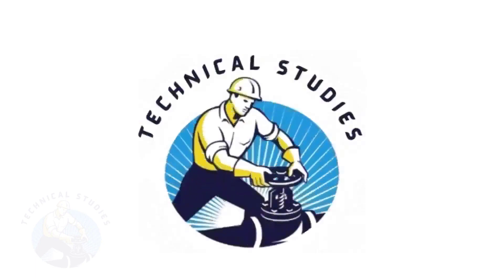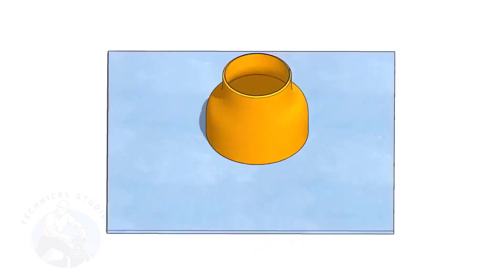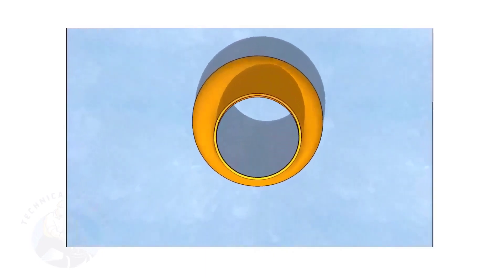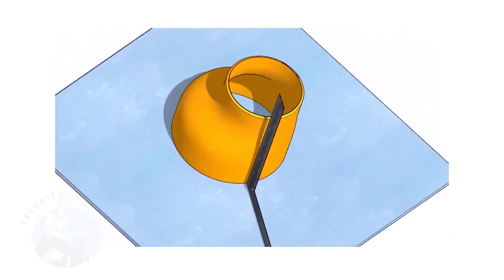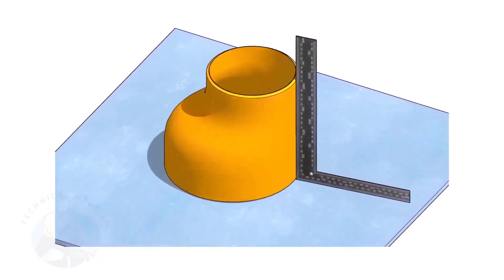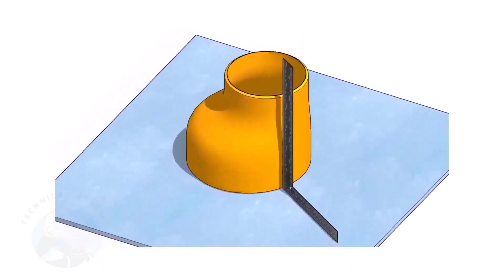Welcome to Technical Studies. Fitting an eccentric reducer to a pipe that is already fitted to another fitting like a flange, tee, elbow, etc. is a little tricky.